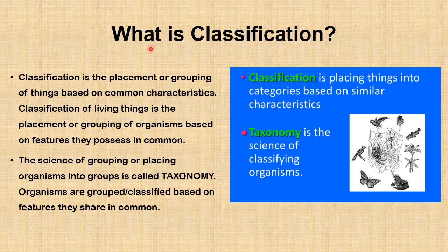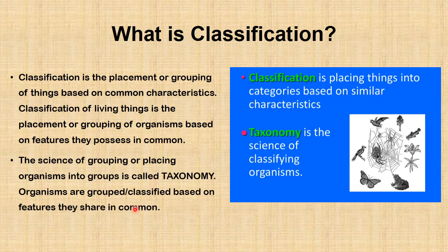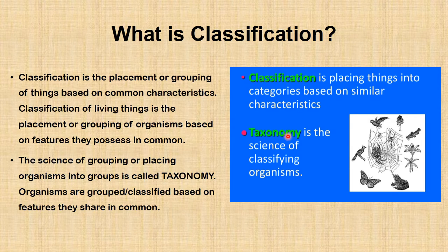We are going to start with this question: what is classification? Classification is the placement or grouping of things based on common characteristics. Therefore, classification of living things is the placement or grouping of organisms based on features they possess in common. The science of grouping or placing organisms into groups is called taxonomy. Another definition of classification is placing things into categories based on similar characteristics, and taxonomy is the science of classifying organisms.